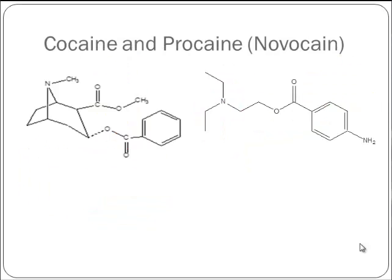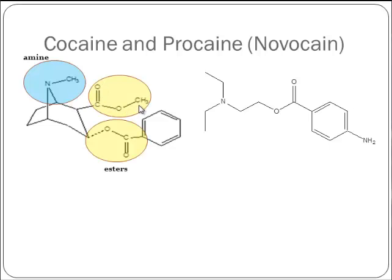Let's compare cocaine and procaine — Novocaine. They're actually more related to each other than you might think. Cocaine has an amine, two esters (C double bond O, single bond O, carbons — twice), and an aromatic. This area is called a bicyclic ring — two rings only partially connected to each other — a very important structural feature in cocaine, but not a specific functional group.